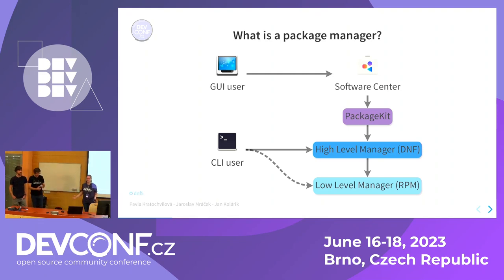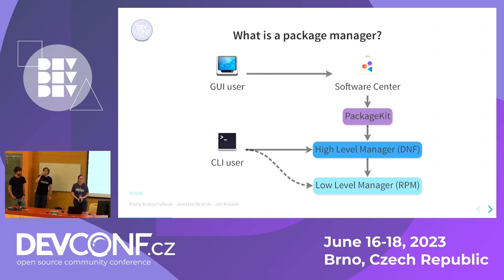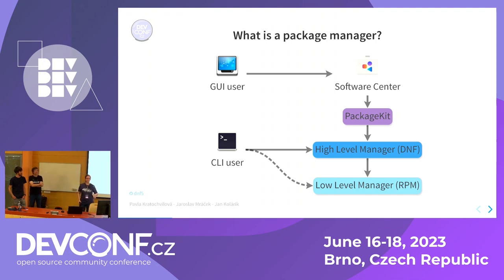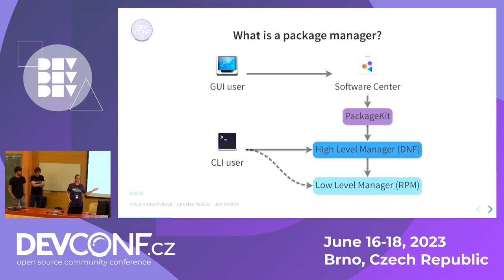So that we are all on the same page: DNF is a package manager, which means software for installing, removing, and upgrading other software. To put it into context, on the lowest level you have RPM which does the actual installation and removal. Above it there is DNF, which uses RPM and understands repositories, modules, and uses Libsolv to resolve dependencies. Above that there is PackageKit, which is the DNF daemon, used by graphical user interface tools.